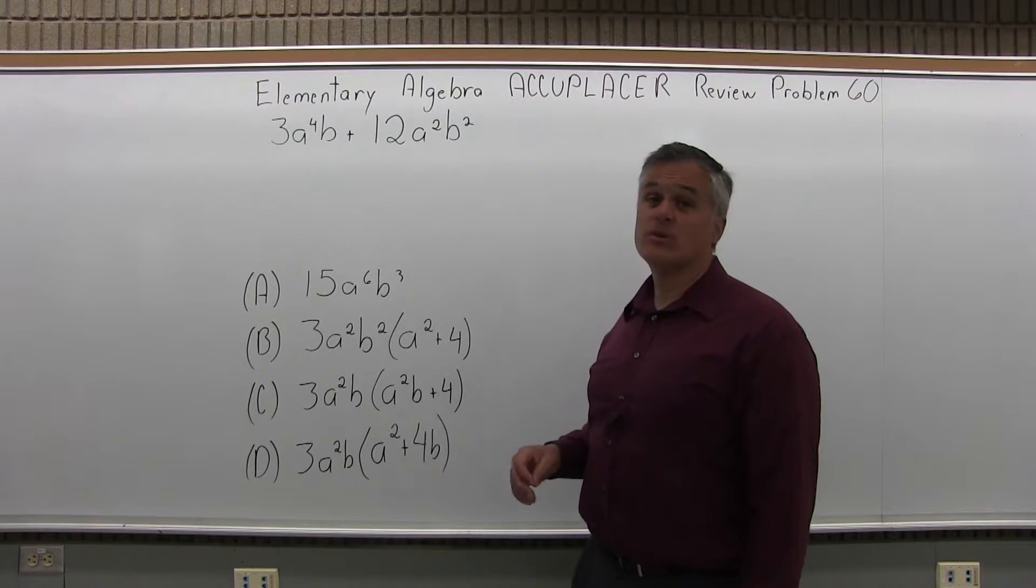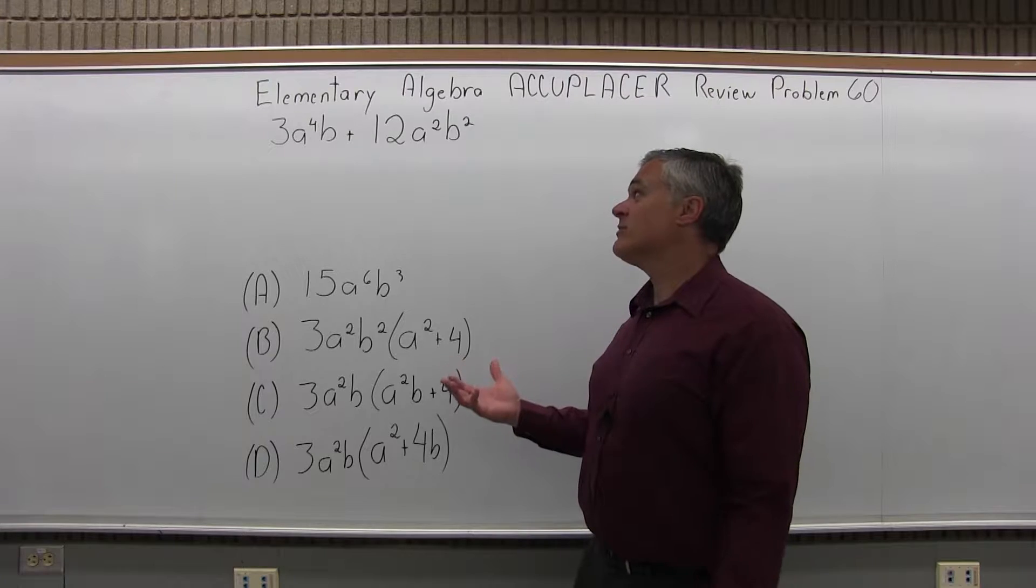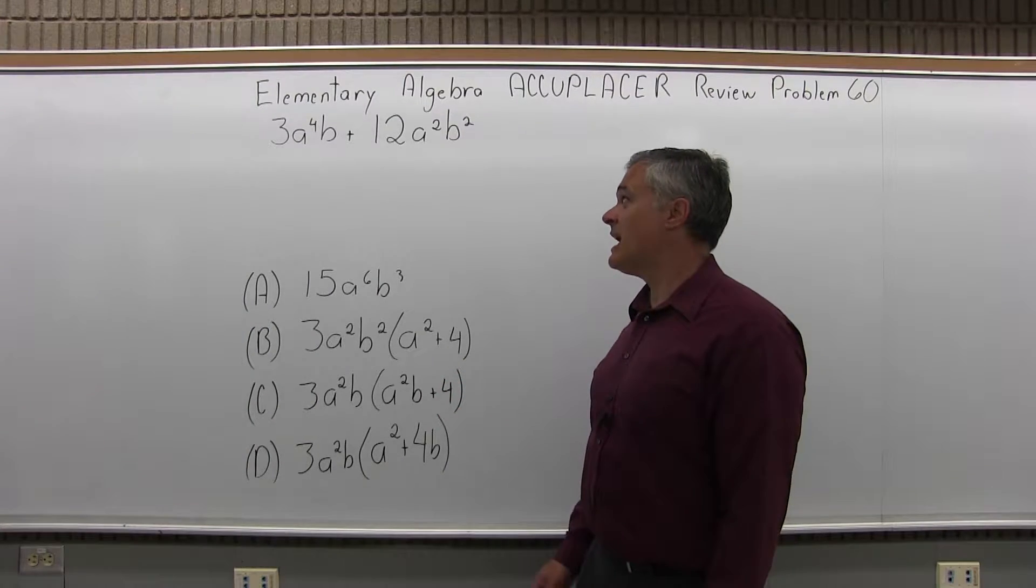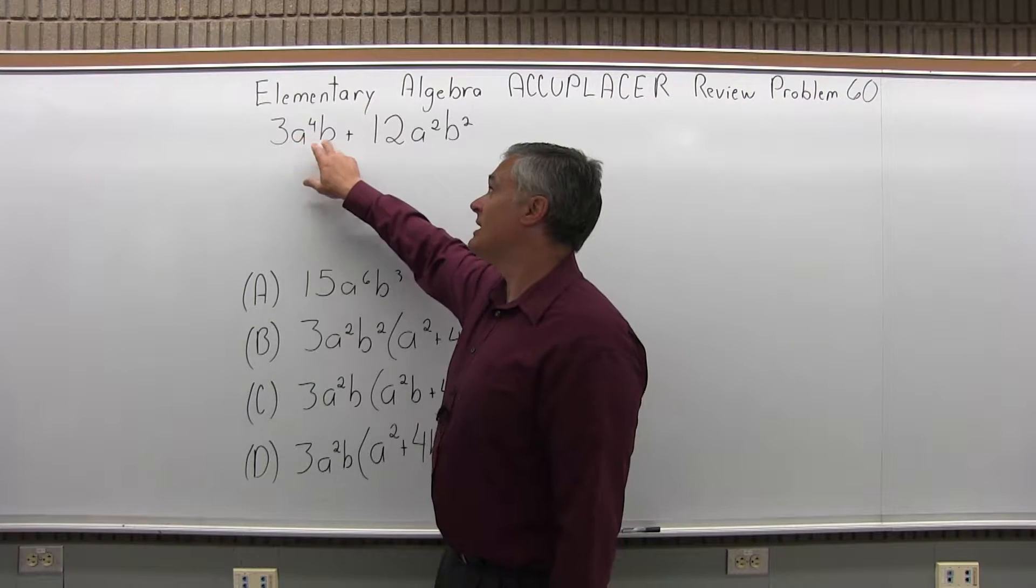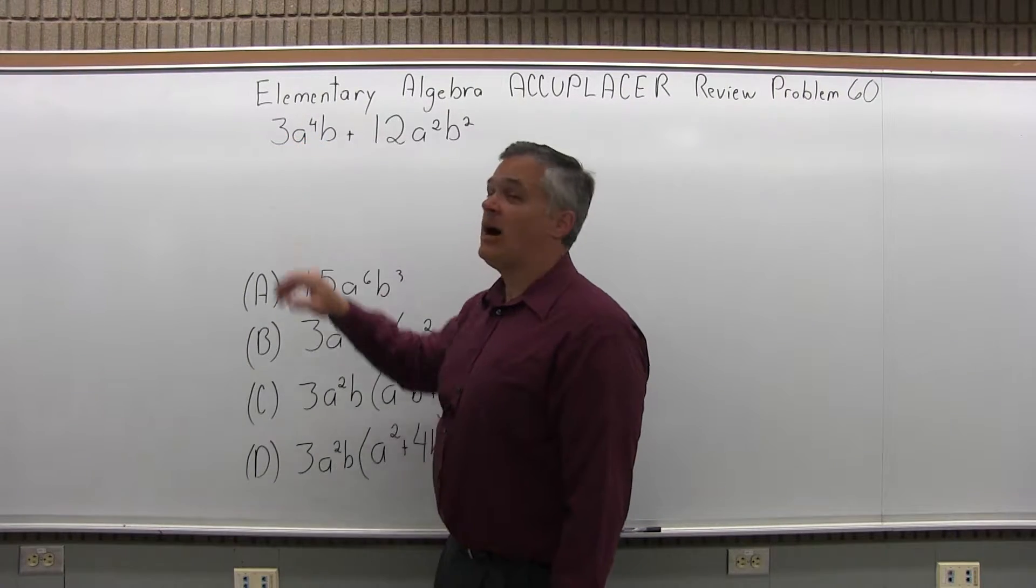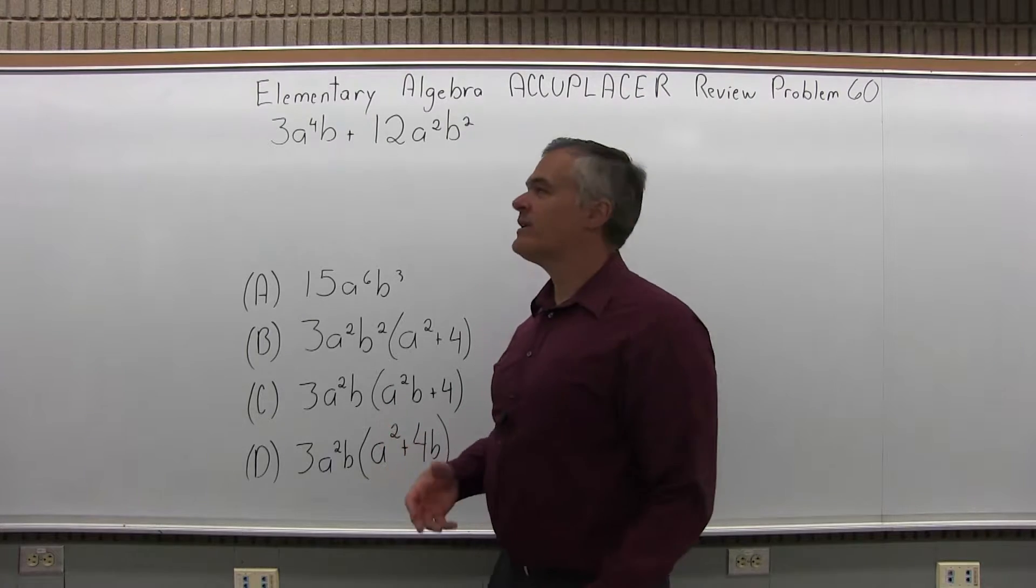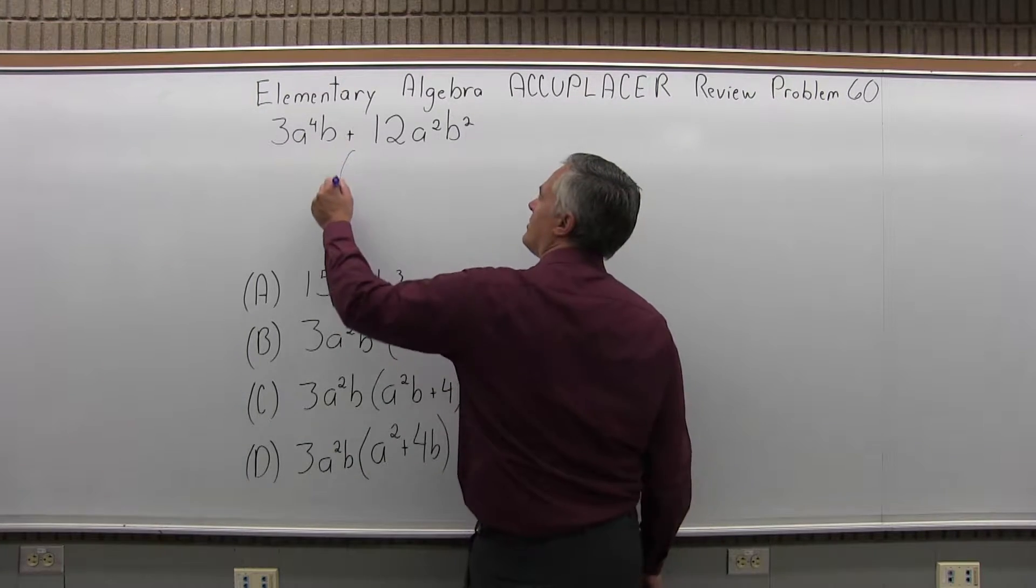So what we have to do with this is factor it, basically make up some parentheses. Now, a lot of things are going on with this. We have a number, we have one type of variable, and a different type of variable. It's best to just focus on one thing at a time. So let me make my parentheses.